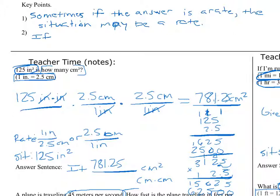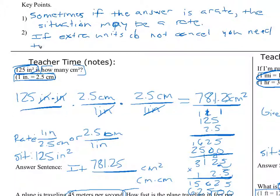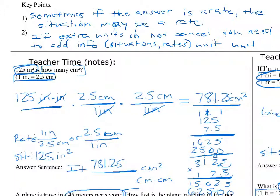Key point: if extra units do not cancel, you need to add information — such as additional situations or rates — until the units cancel correctly.